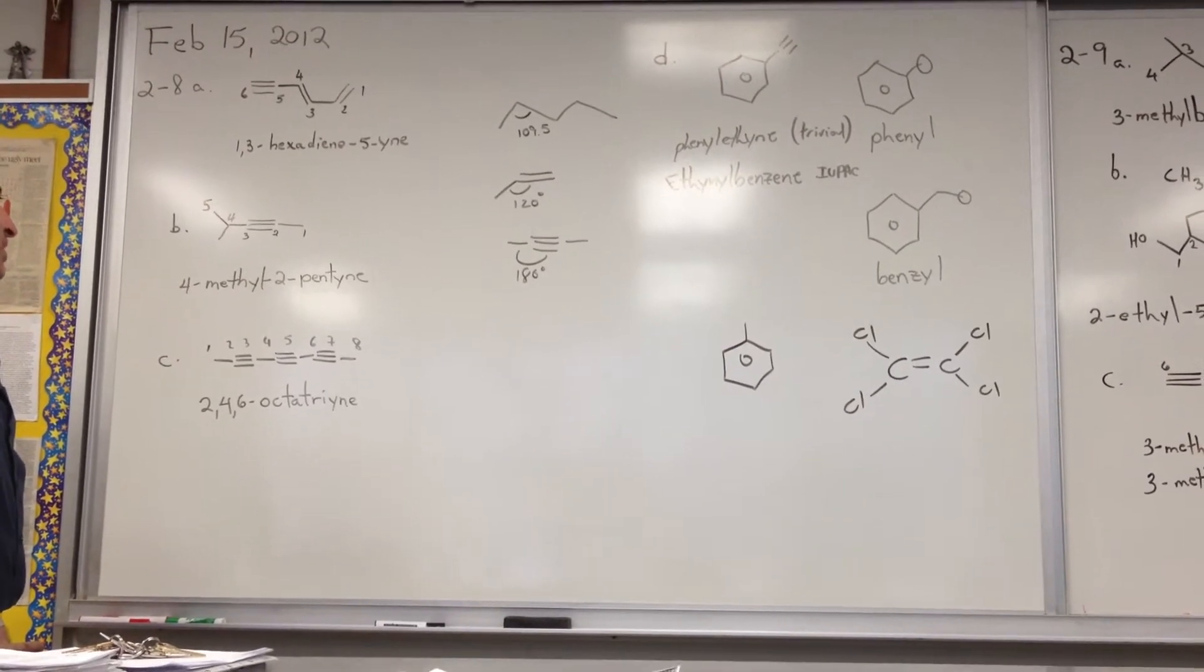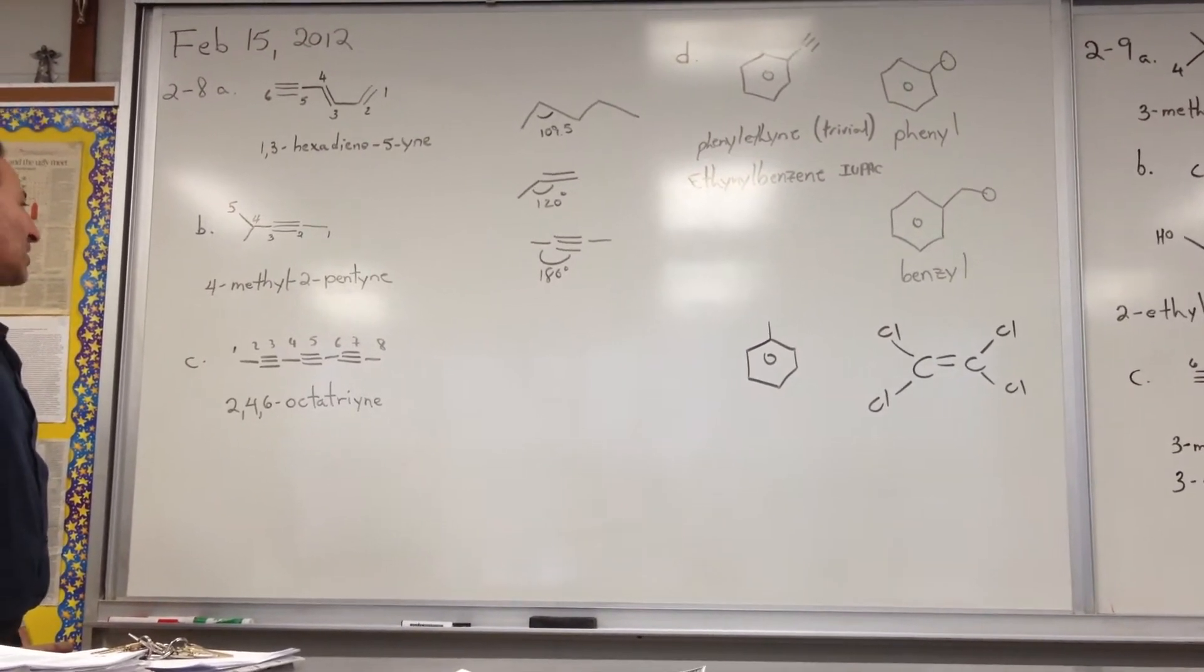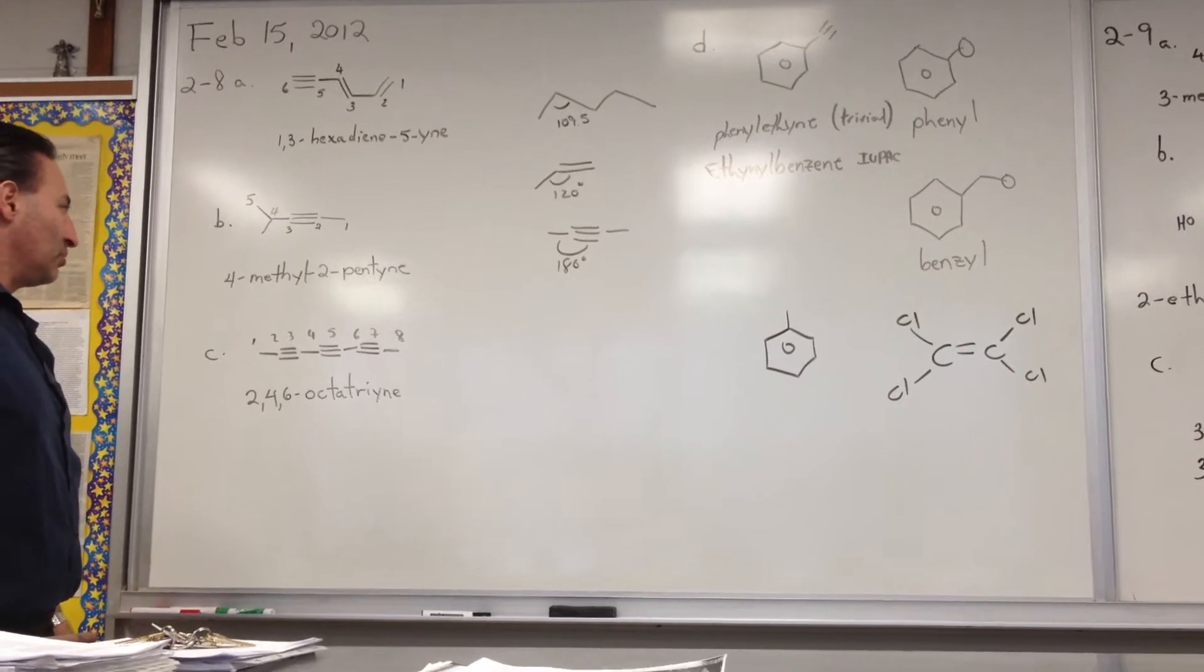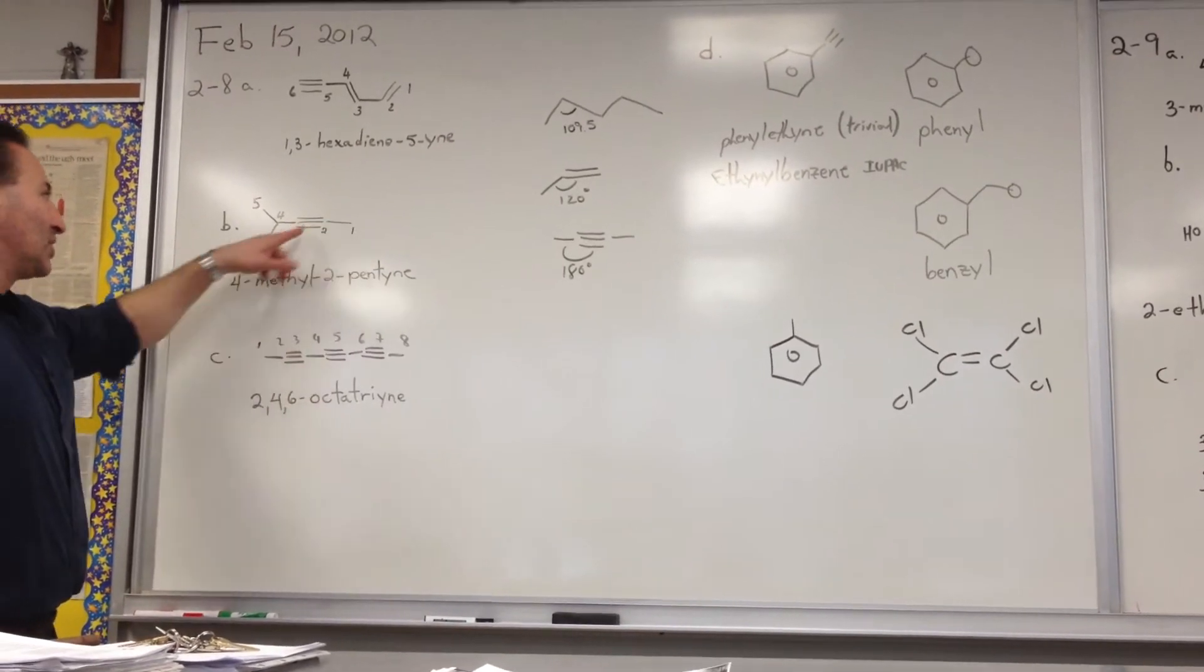So the alkyne is at the second position, the methyl group is at the fourth, so we call this 4-methyl-2-pentyne. The 5-carbon chain is the longest.